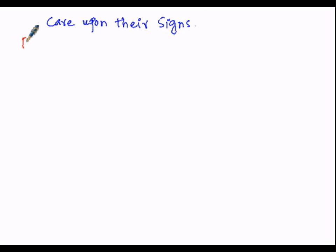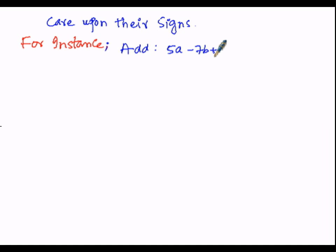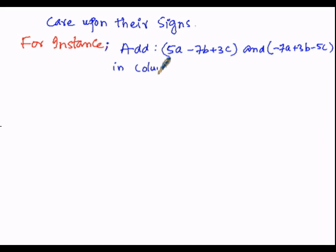Let us perform one illustration. For instance, add 5a minus 7b plus 3c and minus 7a plus 3b minus 5c using the column method. First of all, before starting the solution, we will arrange all the given expressions row-wise.